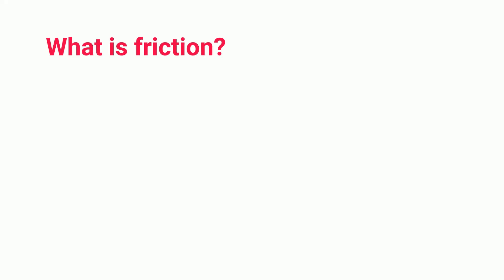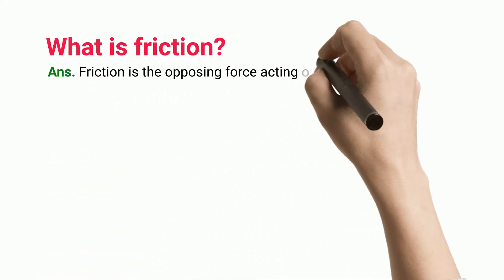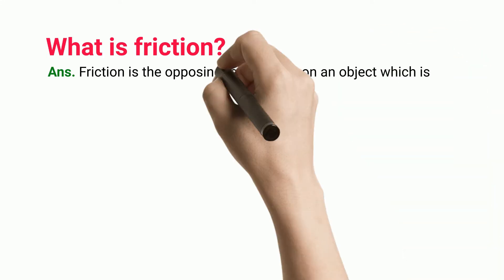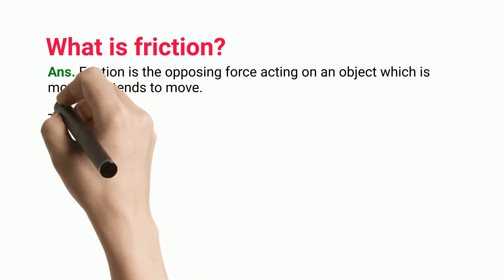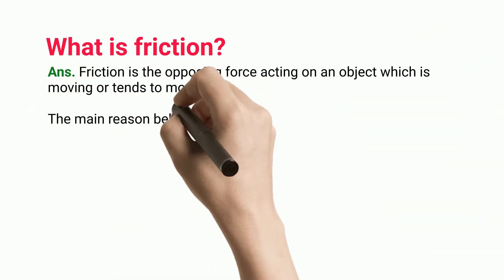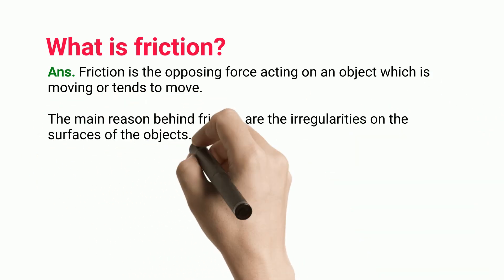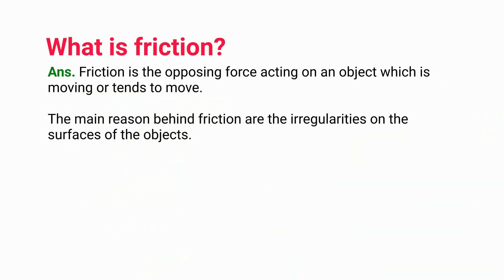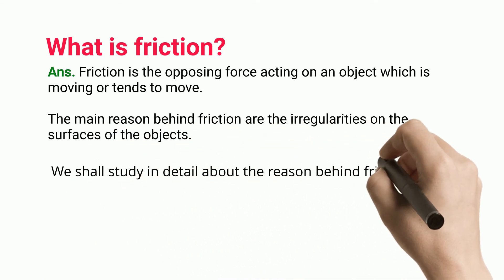What is friction? Friction is the opposing force acting on an object which is moving or tends to move. The main reason behind friction is the irregularities on the surfaces of the objects.